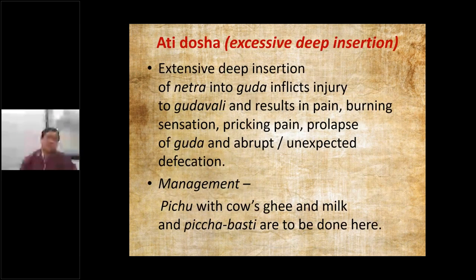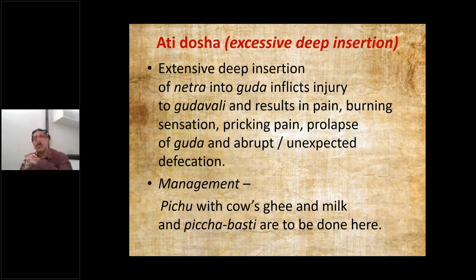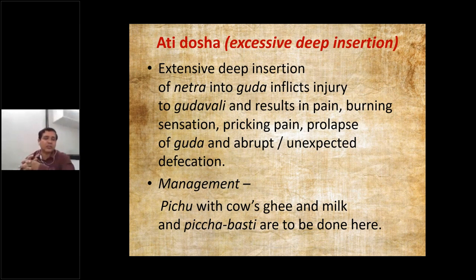Atidusha is excessive deep insertion of that particular Basti Netra by the Basti Pranetu — the administrator. Extensive deep insertion of Netra into Buddha inflicts injury to the Gudavali and results in pain, burning sensation, pricking pain, prolapse of Buddha, and abrupt unexpected defecation. To manage this problem, we have to do Pichabasti with milk. Pichabasti is milk with Mocha — the powder of Shalmali Tvak, or bark of Shalmali, is called Mocha — mixed or cooked with cow's milk, and that medicated milk is pushed in the form of Basti.